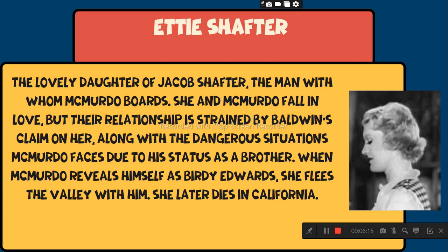Etty Shafter. The lovely daughter of Jacob Shafter — the man with whom McMurdo boards — she and McMurdo fall in love, but their relationship is strained by Baldwin's claim on her, along with the dangerous situations McMurdo faces due to his status as a brother. When McMurdo reveals himself as Birdie Edwards, she flees the valley with him. She later dies in California.